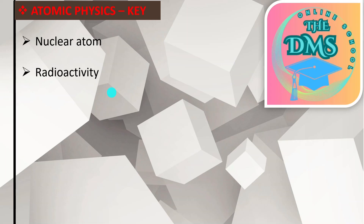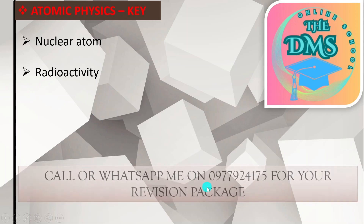I've created a revision package where I've revised questions under each and every topic. For example, for electronics, I pick all the questions that have ever come on that topic, put them together and revise. Same for simple machines, magnetism, and all other topics. This is important because it will make you understand how to answer questions on each topic and how questions are set. The amount is 120 kwacha. You can call or WhatsApp me on 0977-924-175 for your revision package.